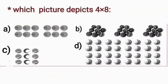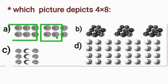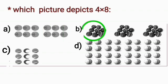Question number 1. Which picture depicts 4 multiplied by 8? Means there are the balls and we have to see the 4 groups of 8 balls. We will start from option A. Here we have 2 groups of 6 balls. That is not correct.